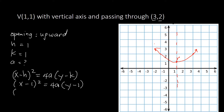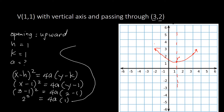Substituting X = 3 and Y = 2: (3 − 1)² = 4A(2 − 1). Simplifying: 2² = 4A · 1, so 4 = 4A. Dividing both sides by 4, we get A = 1.